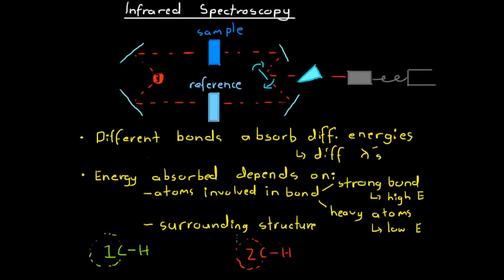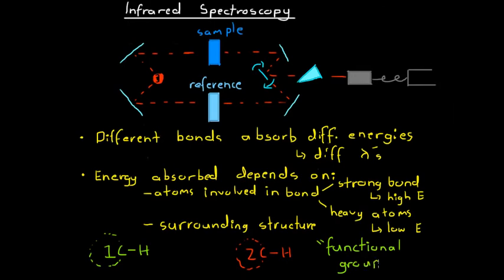We can analyze an unknown compound by using this absorption of infrared light to help identify it using infrared spectroscopy. Because different functional groups or different bonds absorb different energies — and thus different wavelengths of light — we can analyze the wavelengths absorbed by an unknown compound and figure out a little bit about its structure.